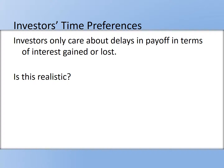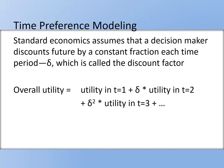This idea of constantly discounting the future comes much earlier than the modern discipline of economics — it's simply mathematically convenient. Discounting the future by a constant amount mathematically lends itself to a very clean formula. Standard economics assumes that the decision maker discounts the future by a constant fraction each time period, delta, the discount factor. The overall utility would be utility in the first period, plus delta times the utility in the second period, plus delta squared times the utility in the third period.